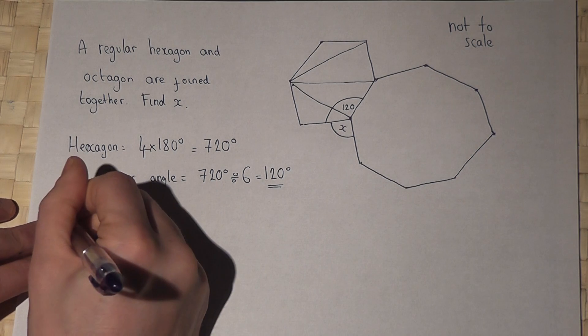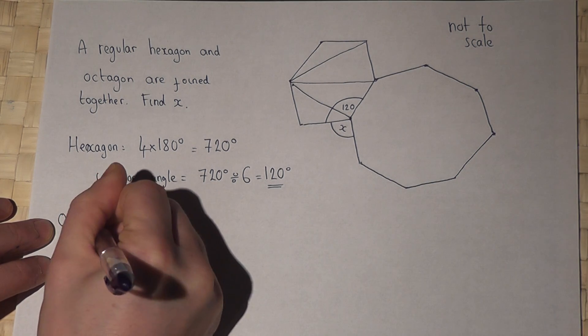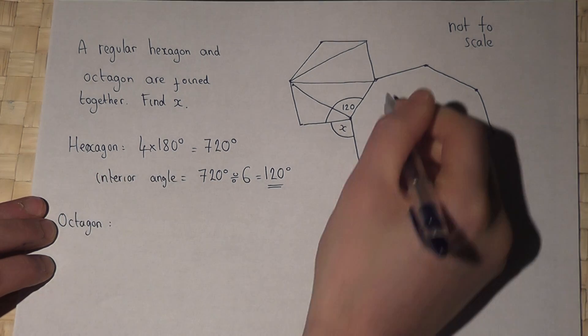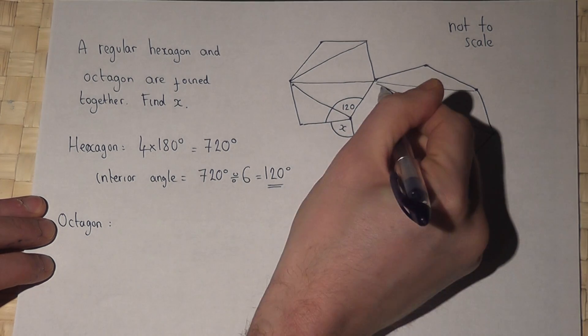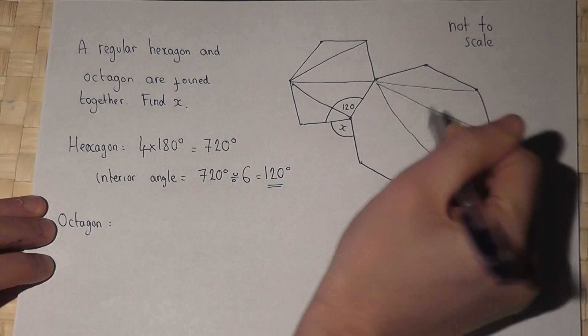Now, in a similar way with the octagon, this can be turned into not four, but six interior triangles.